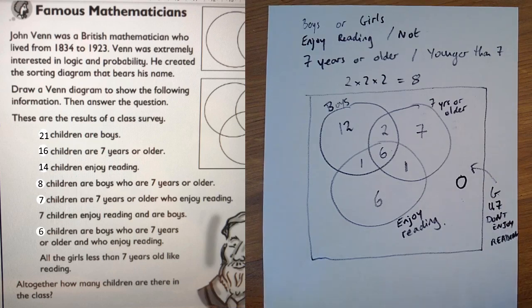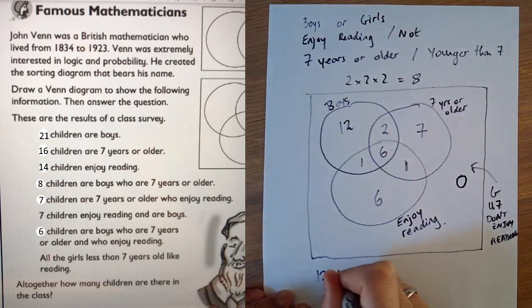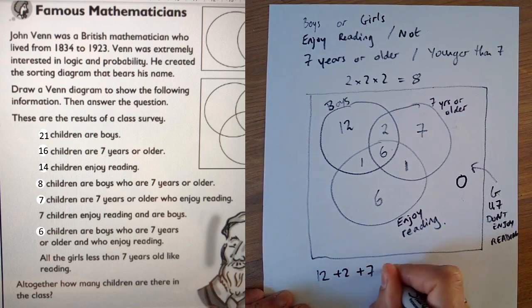So the answer to the question how many children are there in the class is just all these numbers added up. It's, well I shall write it down. Twelve plus two plus seven plus one plus six plus one plus six. Might as well write plus zero.